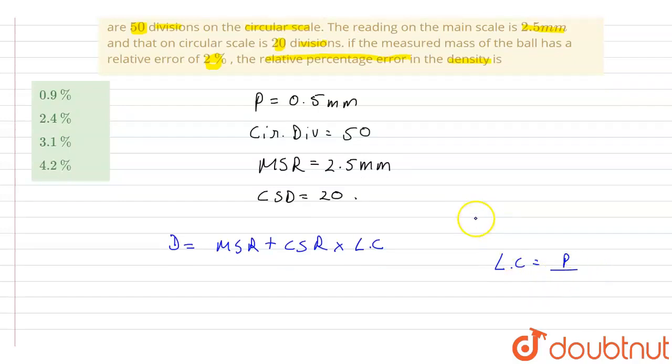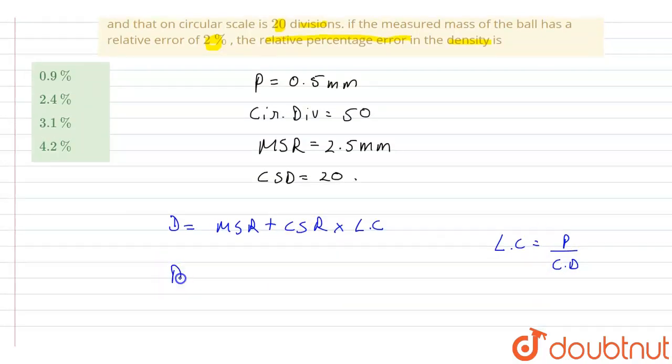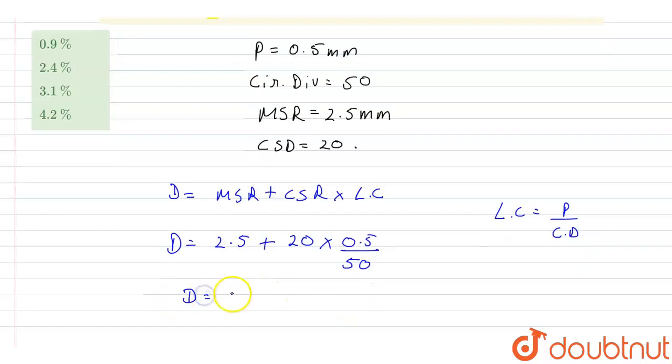So let us calculate diameter. This will be equal to MSR is 2.5 mm plus CSR is 20 multiplied by least count, which is pitch 0.5 divided by total circular divisions that is 50. So from here diameter D will be equal to 2.7 millimeter.